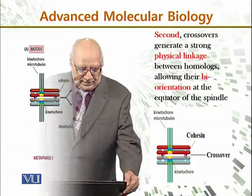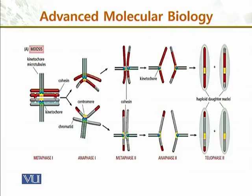As shown in this diagram, the kinetochores are separated, cohesion forces are removed, and then the chromatids separate altogether and segregate into two haploid daughter cells.